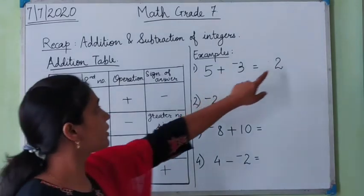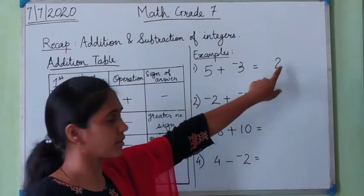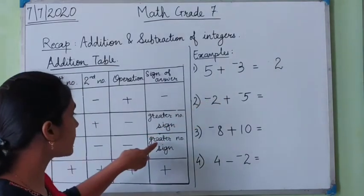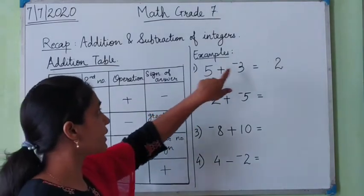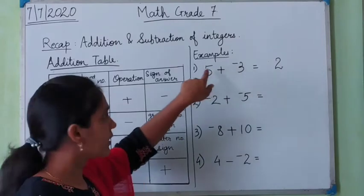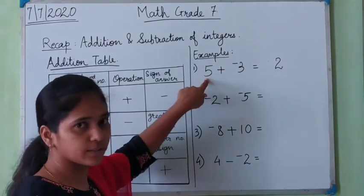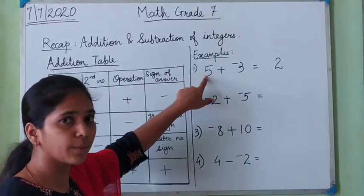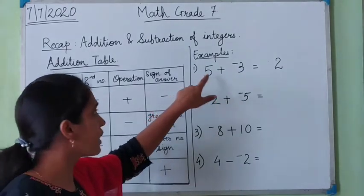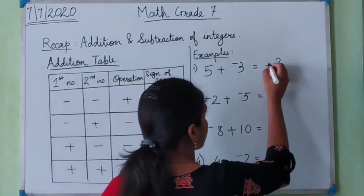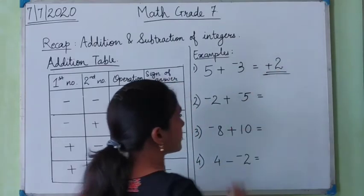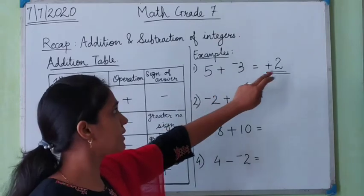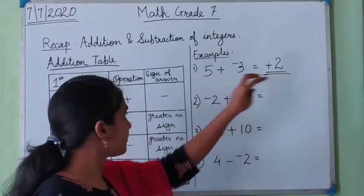Now we need to put the sign on this answer. The sign of the answer will be the greater number's sign. Which is the greater number from 5 and 3? 5 is the greater number, and the sign of 5 is positive. So the answer will be positive. The answer of 5 plus negative 3 is positive 2.